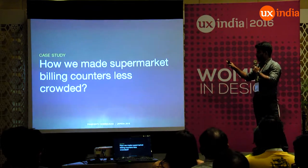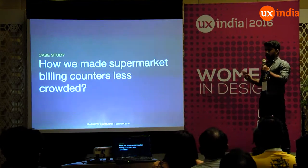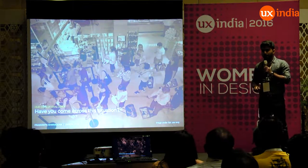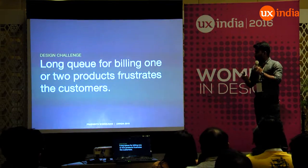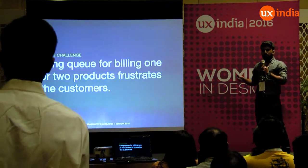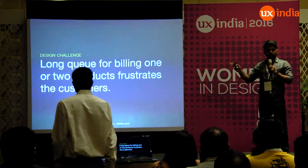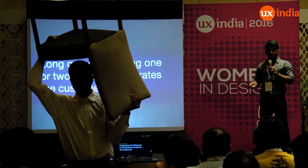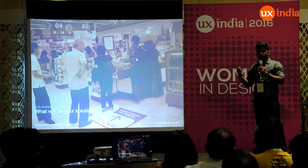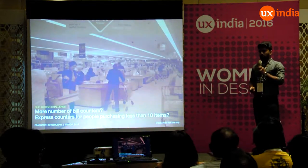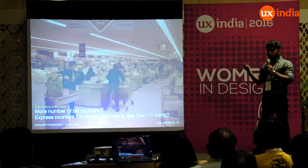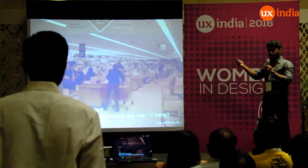We picked a problem from society: how to make supermarket billing counters less crowded. Long queues at billing counters may not seem like a big problem, but if you are purchasing only two items and need to stand for 30 minutes, that is a problem — especially for elderly or physically challenged people. Quick solutions like increasing bill counters or adding express counters have been tried, but they haven't fully worked — otherwise we wouldn't still have long queues.